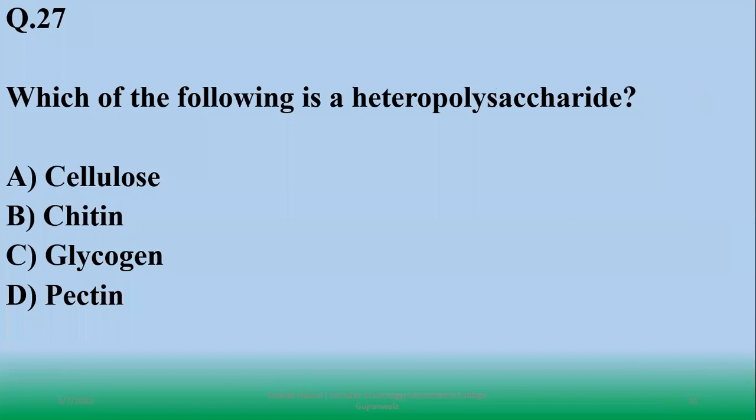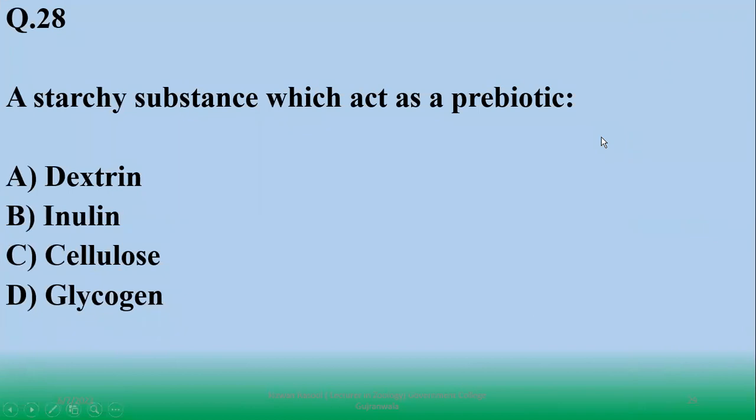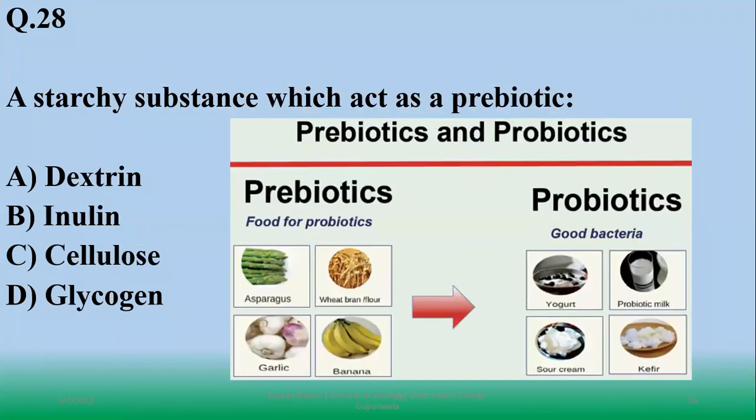Which of the following is heteropolysaccharide having different monomers? So right option is pectin. Cellulose, chitin and glycogen are homopolysaccharides with similar monomers. Different monomers may include gum, pectin, glycosaminoglycans or mucopolysaccharides - these are heteropolysaccharides. A starchy substance which acts as prebiotic - prebiotics are food for probiotics, and probiotics are healthy bacteria in your gut. So B, inulin.